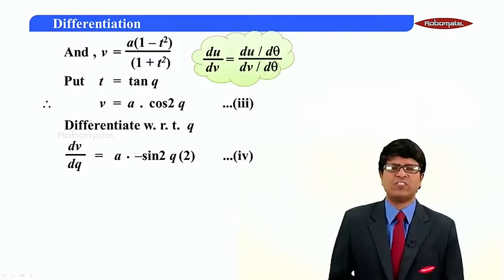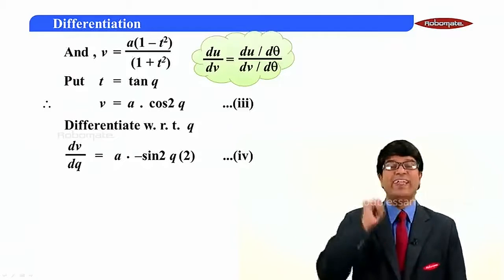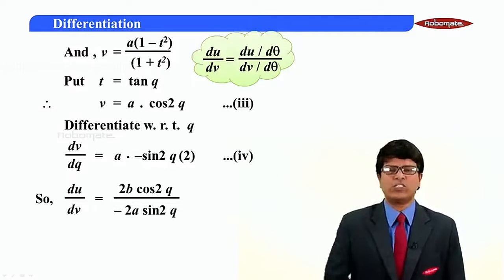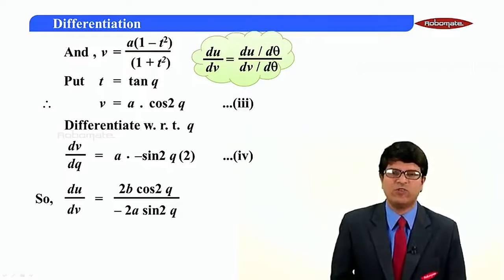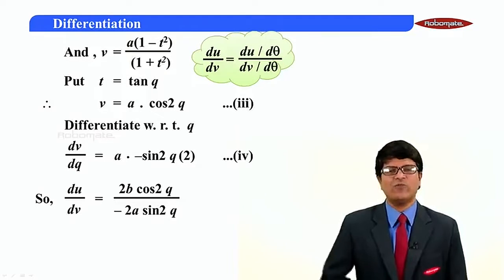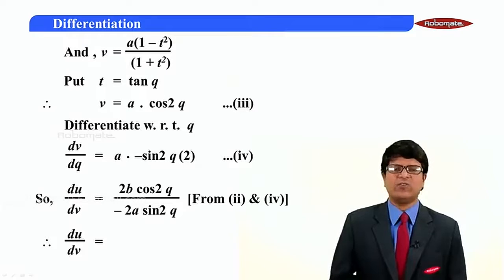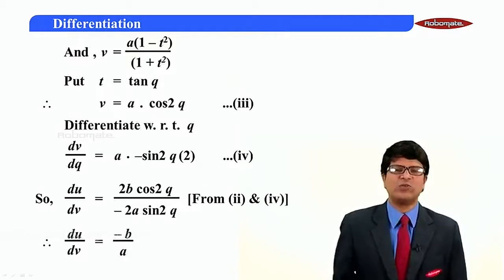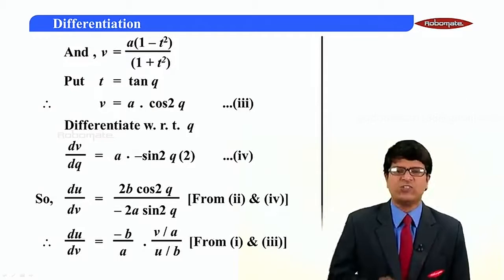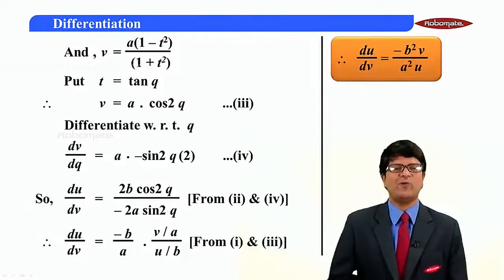du by dv in a parametric function is nothing but du by d theta upon dv by d theta. So here it will be du by d theta upon dv by d theta, which gives 2b cos 2 theta upon minus 2a sin 2 theta. Now cos 2 theta is v divided by a, and sin 2 theta is u divided by b. Substituting these, du by dv is equal to minus b squared v upon a squared u, as required.